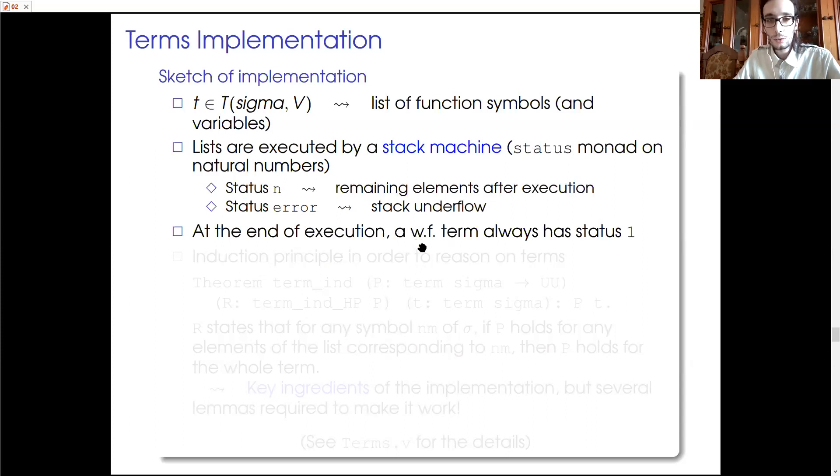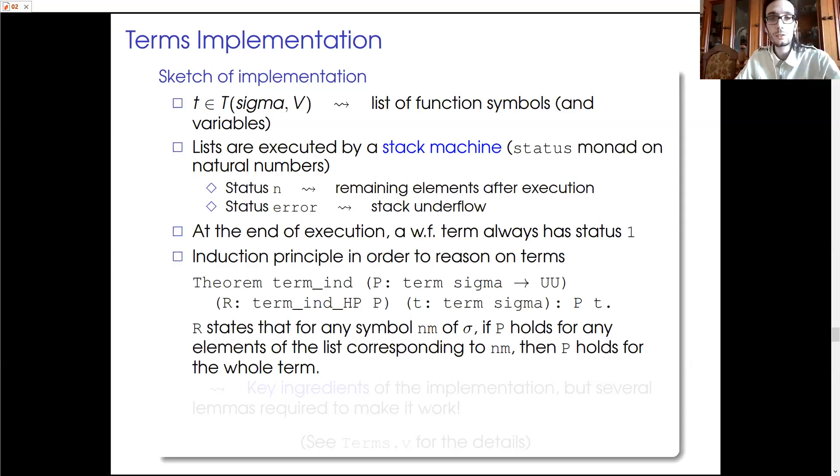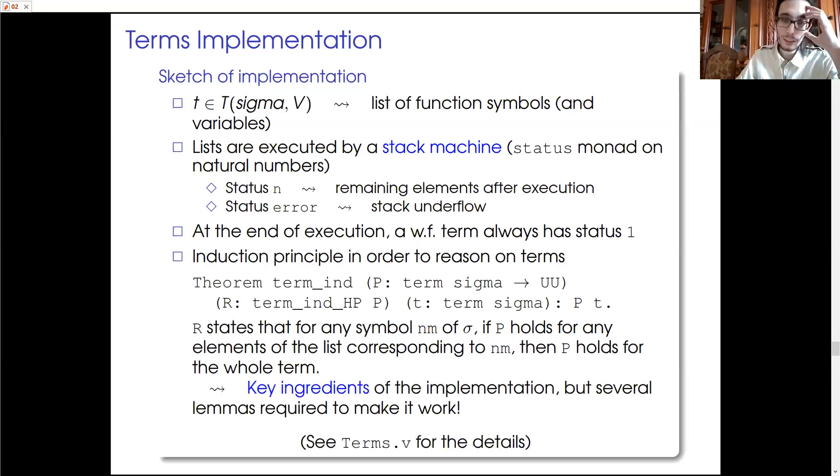So that we could say that a well-formed term always has status 1 after a complete execution. And having this implementation, we have been also able to construct an induction principle to reason on these terms. And we use an inductive hypothesis on the list corresponding to a given term. And using this induction principle, we can define functions that UniMath is able to evaluate correctly. So we can simplify our proofs and shorten our proofs during the interactive proof environment. So these are the key ingredients of the implementation. But obviously there are several definitions and lemmas behind that formalization. And they constitute a specific file in our preliminary library.